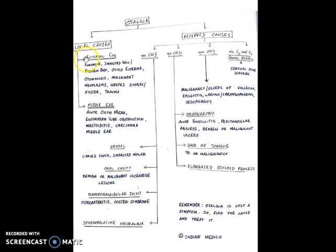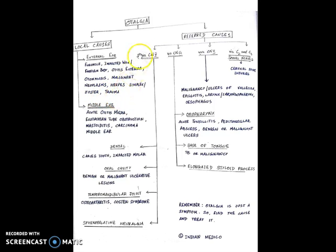The local causes can be further divided into external ear causes and middle ear causes. The abnormalities in the external ear that can lead to otalgia include furuncle, impacted wax or foreign body, otitis externa, otomycosis, malignant neoplasms of the external ear, herpes simplex or zoster infection, and trauma.